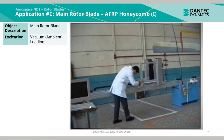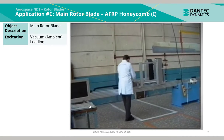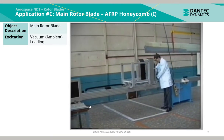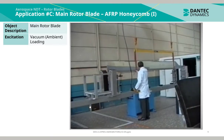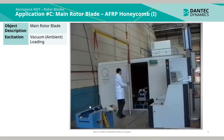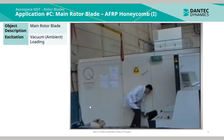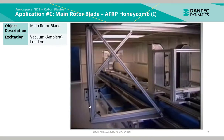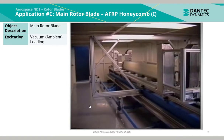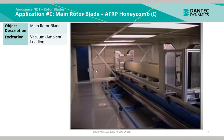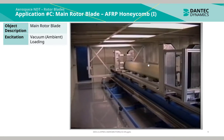Here it can be seen the operator adjusting the mounts and brackets to hold the blade in place during the inspection. The blade is then inserted inside the vacuum chamber and the inspection commences. Both sides of the blade are inspected simultaneously, with one sensor on the left side and another on the right side.